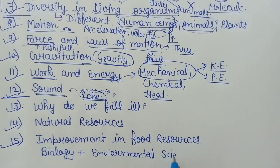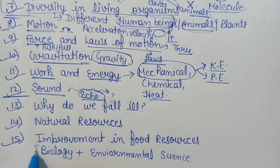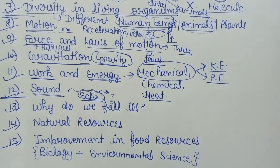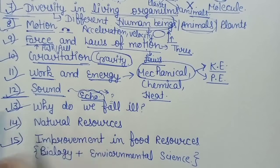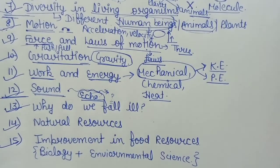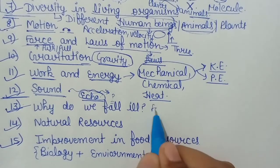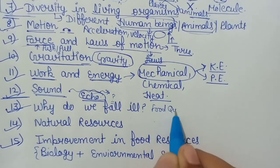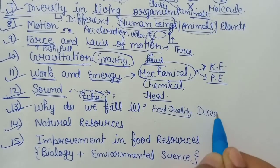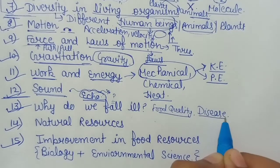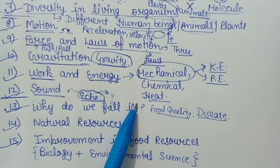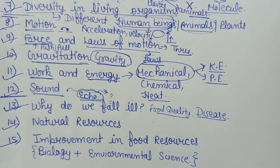इसके अंदर biology और environmental science दोनों important role play करेंगी। Chapter number 13 — that is Why Do We Fall Ill? कि हम बीमार क्यों पड़ते हैं? बहुत सारे reasons हैं — food quality अच्छी नहीं है और हमें कोई न कोई disease है — तो वो disease क्या है, उसका कारण क्या है — यह सब हम पढ़ेंगे in chapter number 13.